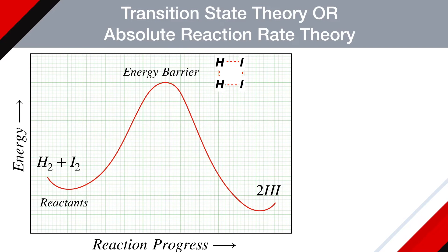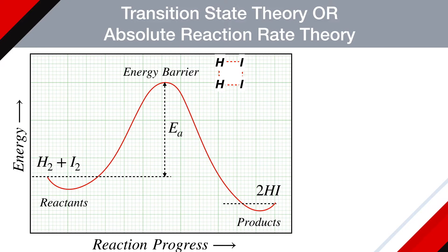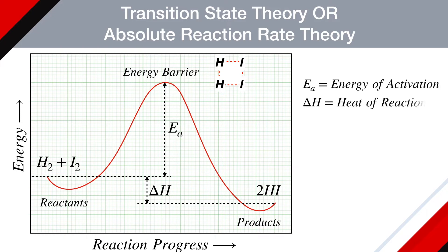Finally, this transition state decomposes forming two molecules of hydrogen iodide, the product. The difference between the energy of the reactants and the energy of the transition state is Ea, the energy of activation. The difference between the energy of the reactants and the energy of the products is known as the heat of reaction, delta H.